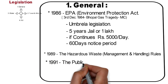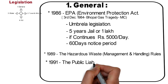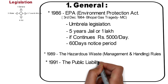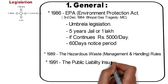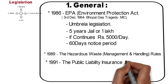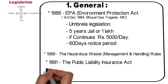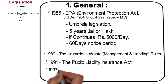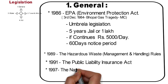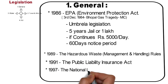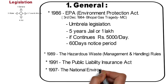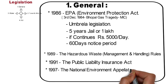In 1991, the Public Liability Insurance Act was introduced. This act provides immediate relief to persons affected by an accident while handling any hazardous substance. In 1997, the National Environment Appellate Authority Act was created to hear appeals.